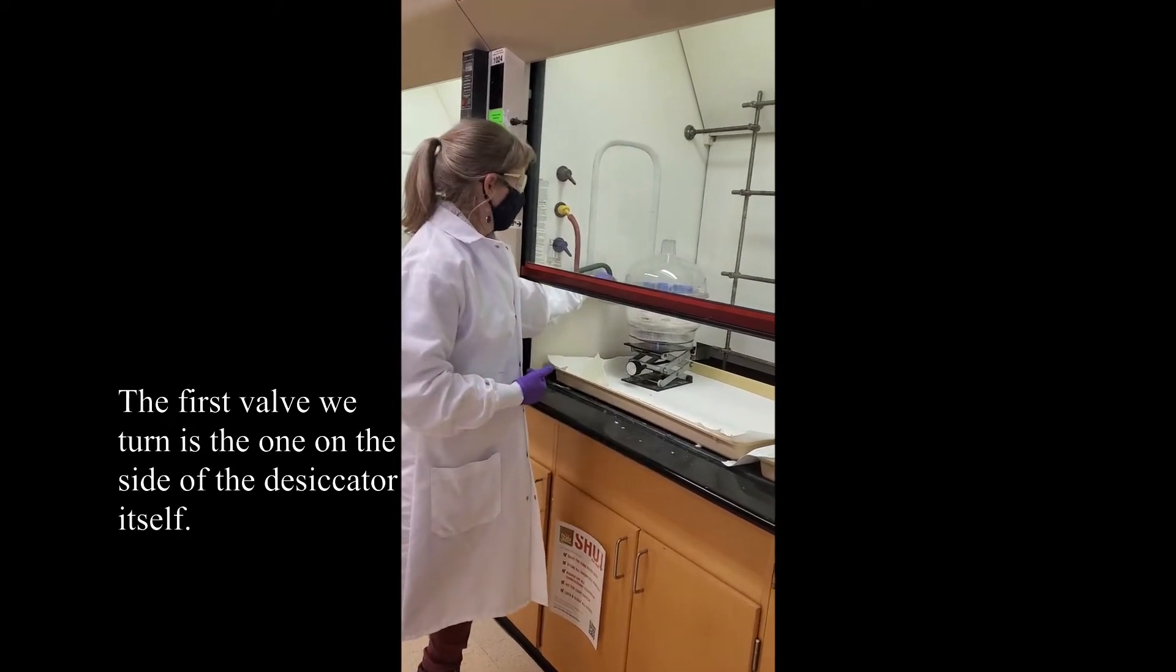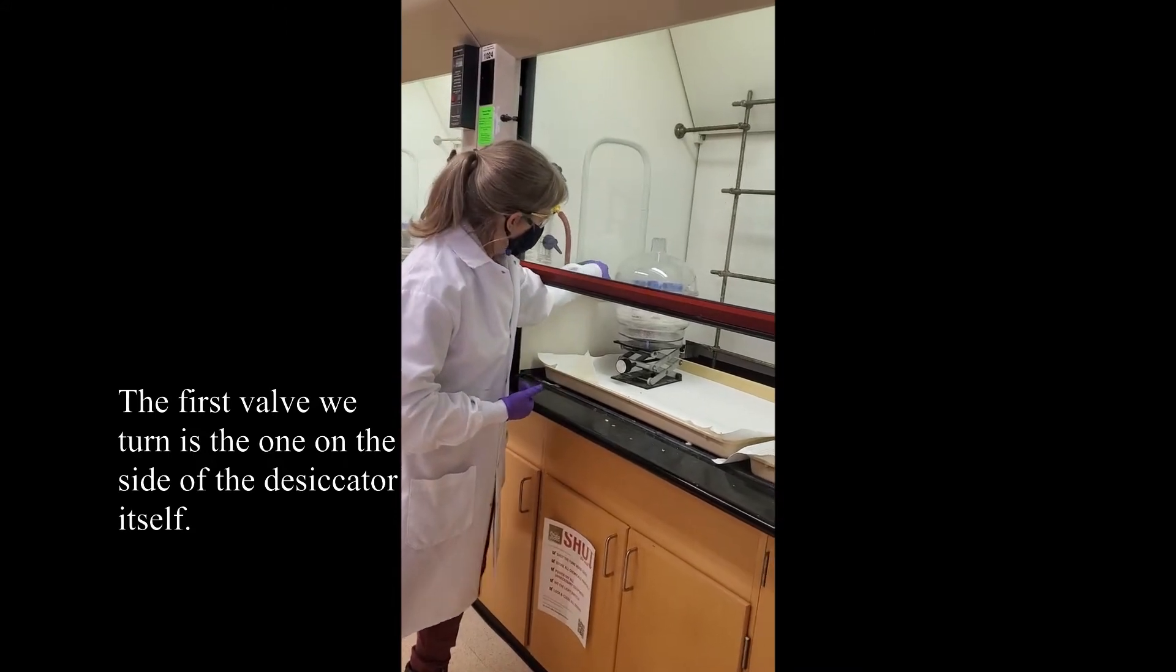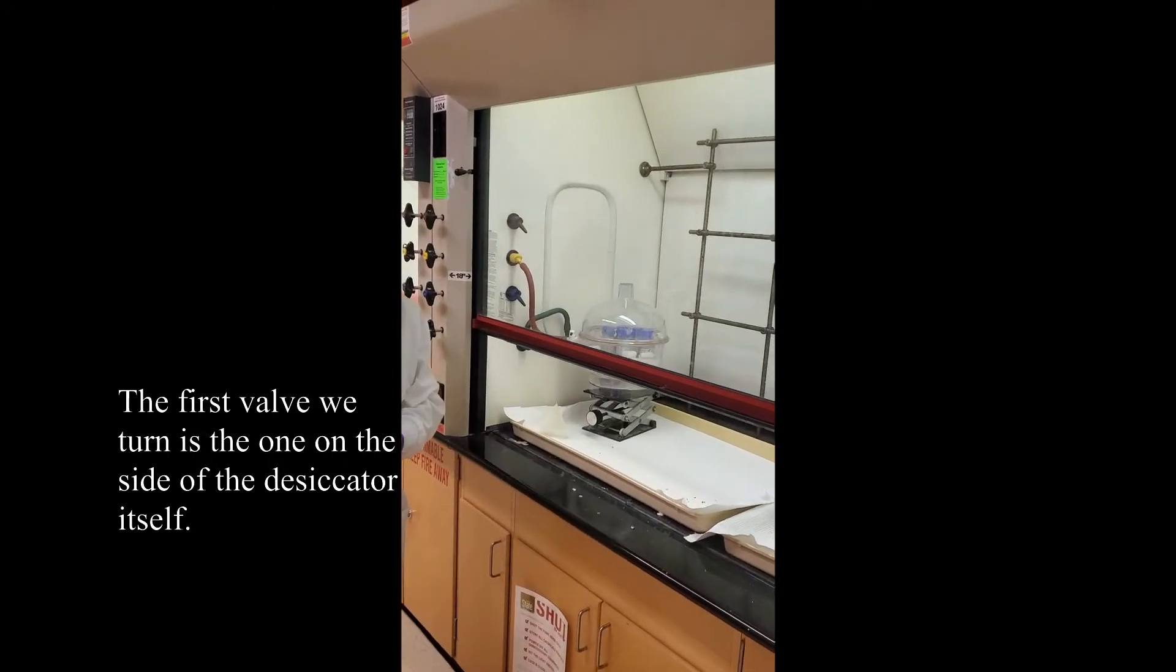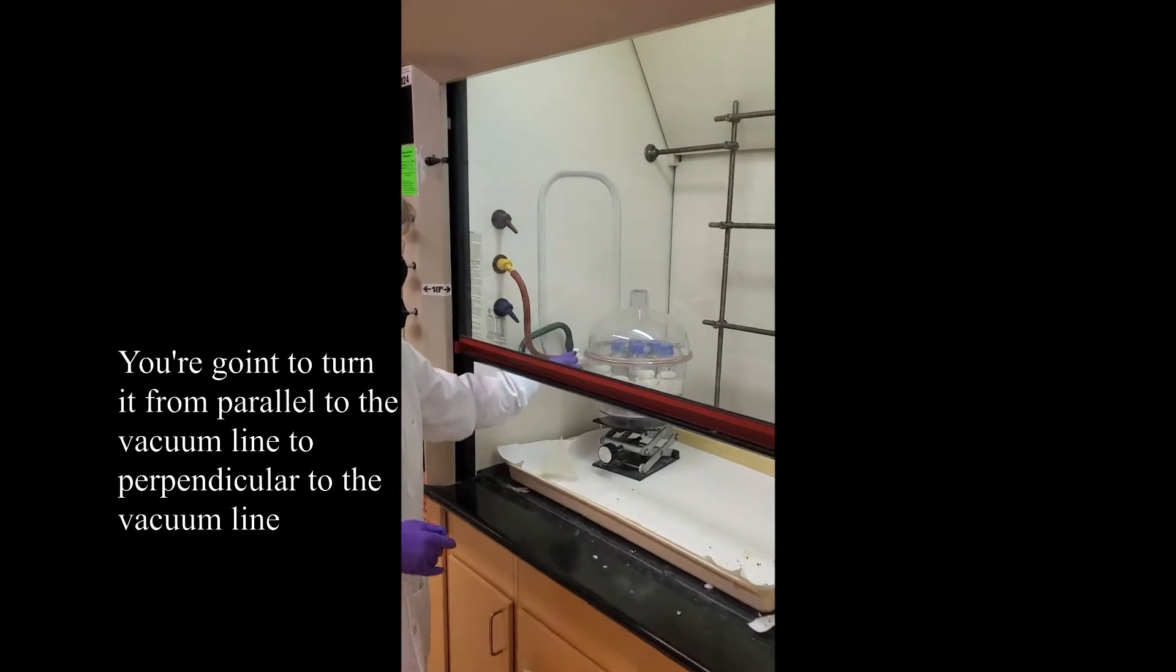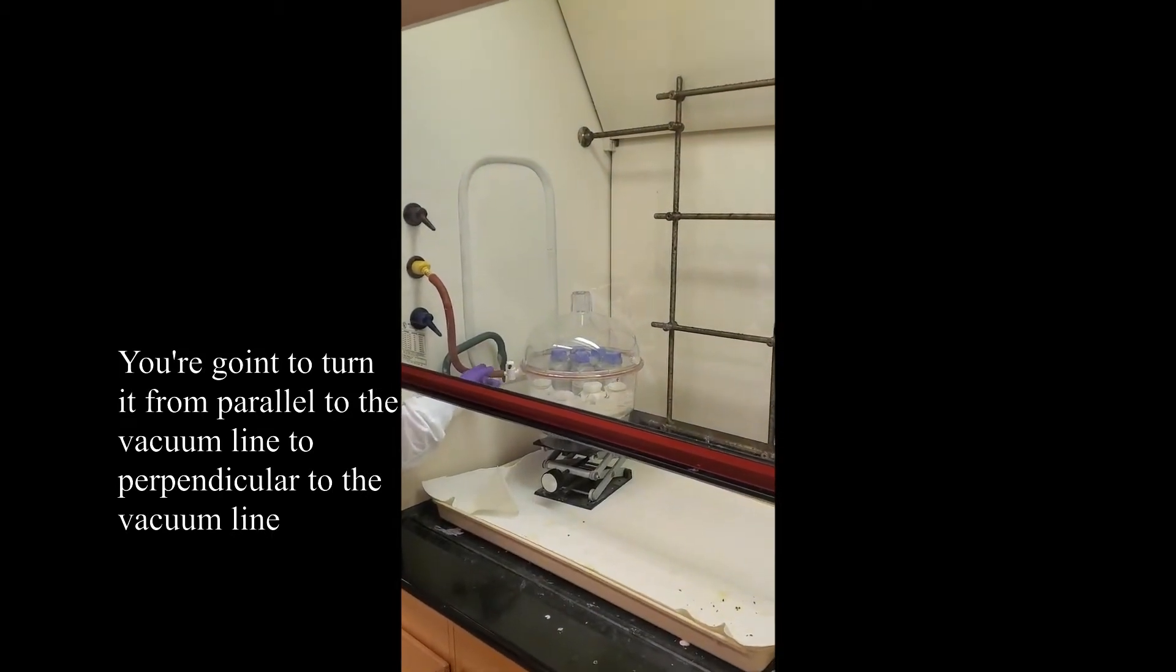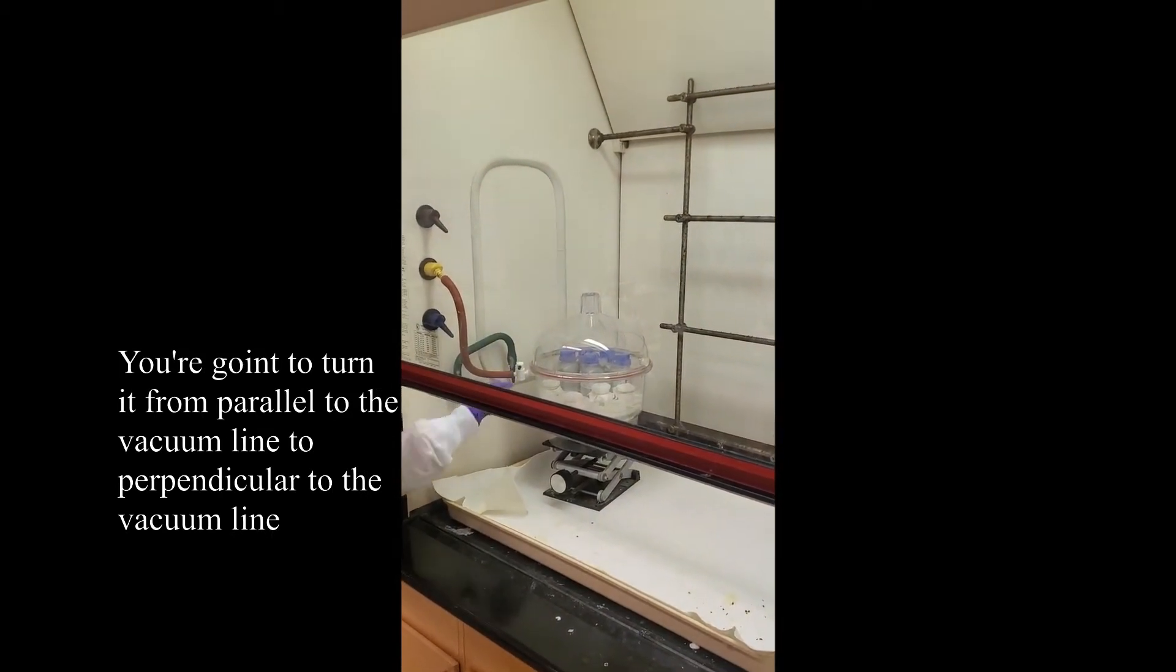The first valve we turn is the one on the side of the desiccator itself. We're going to turn it from parallel to the vacuum line to perpendicular to the vacuum line.